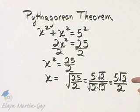The length of each leg of the triangle is 5 square root of 2 over 2 units.